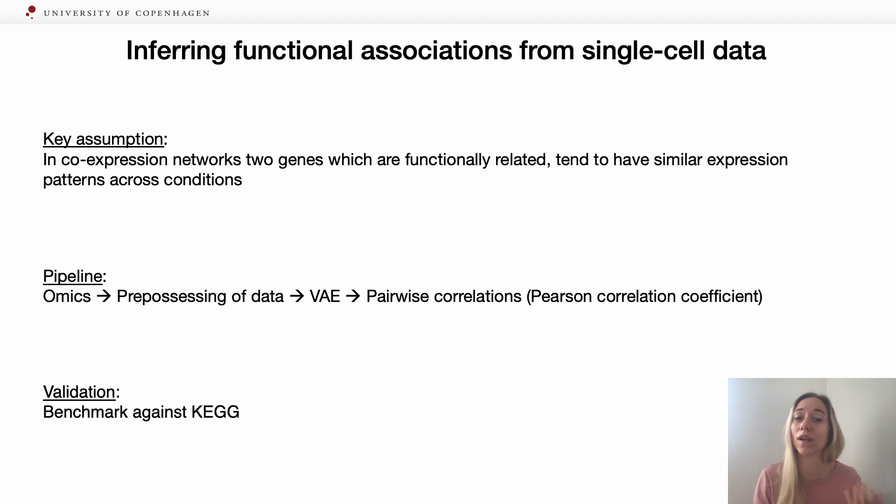Based on that, and the fact that we want large-scale data, we went on the pipeline where we start with our omics, we pre-process them accordingly, we have a dimensionality reduction method, which in our case is variational autoencoders, and then we create pairwise correlation by applying Pearson correlation coefficient. That outputs a list of protein pairs with assigned scores.